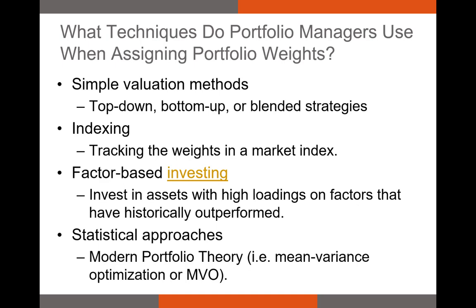We also have statistical approaches, the most famous being modern portfolio theory, which we'll cover this week. Sometimes called mean-variance optimization or MVO, we take means, standard deviations, and correlations of assets and let the computer determine the appropriate weights. This is essentially what automated portfolio managers or fintech software uses when selecting securities — they're probably using modern portfolio theory or mean-variance optimization.